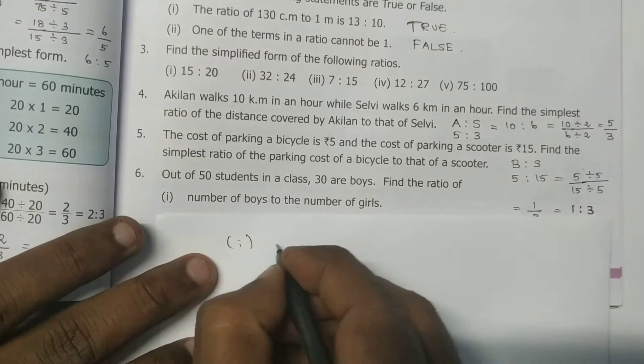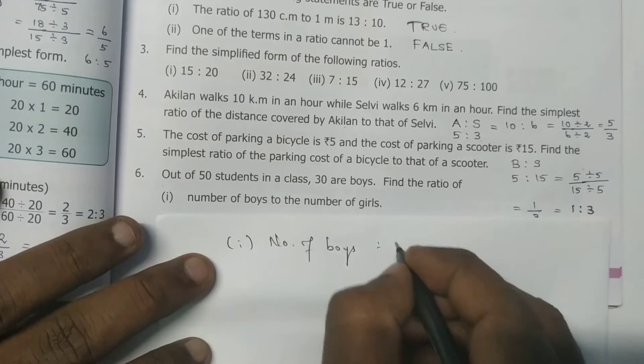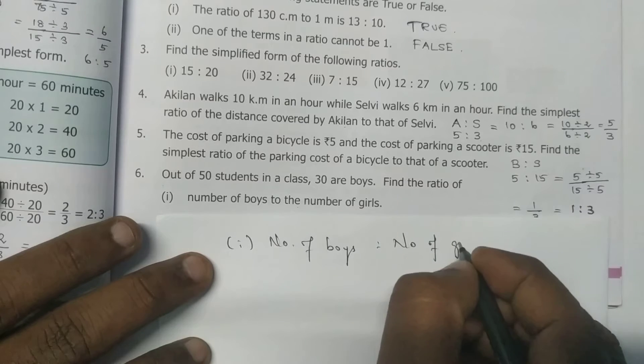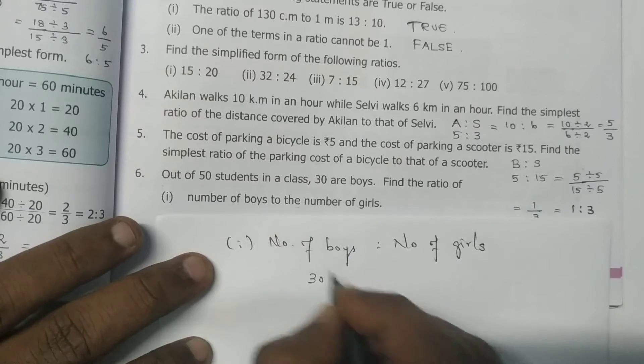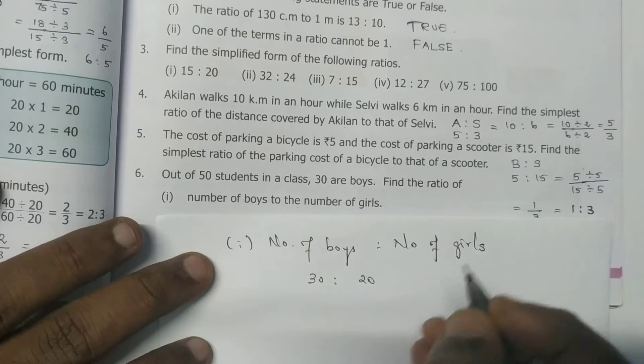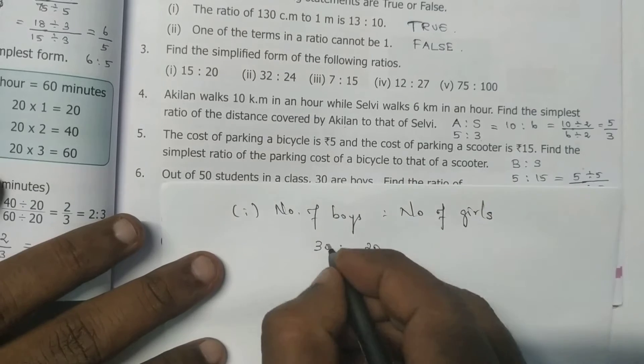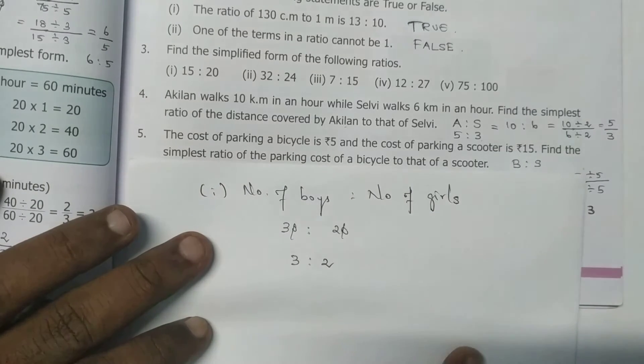So first one, number of boys ratio number of girls. So 30 are the boys. Out of 50 students, 30 boys, then balance 20 are girls. Now 30 to 20, cancel it. Now 3 is to 2 is the first answer.